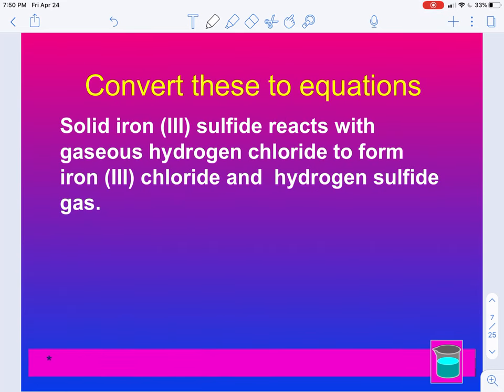So here's an example of a word equation. From this, we're going to write the skeleton equation, and then we'll balance it. So solid iron (III) sulfide reacts with gaseous hydrogen chloride, another name for this is hydrochloric acid, to form iron (III) chloride and hydrogen sulfide gas. The first thing you do with a reaction like this is you identify the compounds. So we have iron (III) sulfide, hydrogen chloride, iron (III) chloride, and hydrogen sulfide.